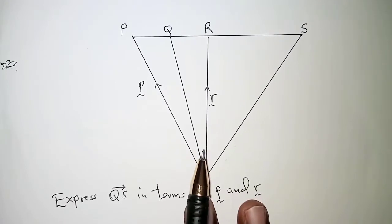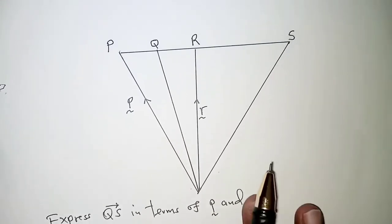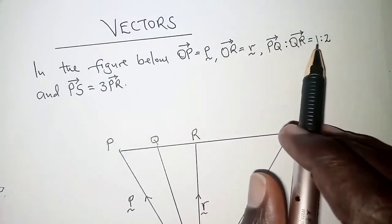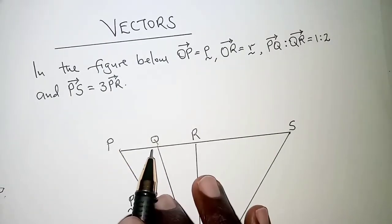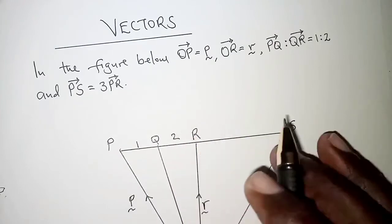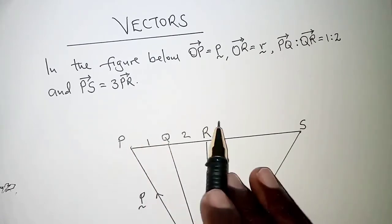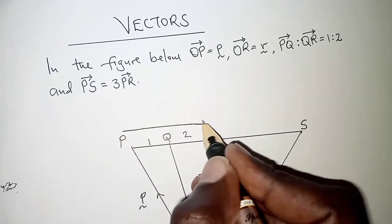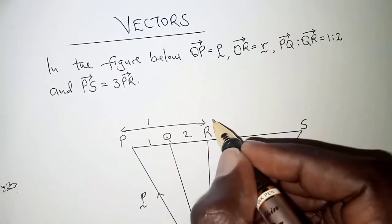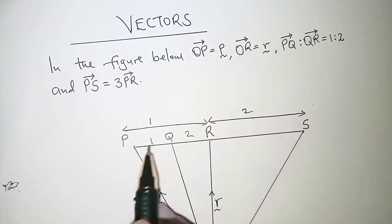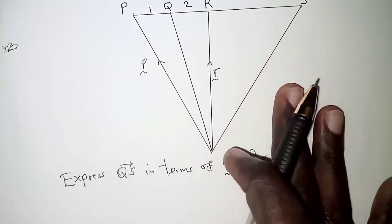We have the diagram as shown, and we need to express QS in terms of p and r. First we interpret the ratios: PQ to QR is 1 to 2, meaning from P to Q and then Q to R the ratio is 1 to 2. We are also told PS is 3 times PR, so if PR is 1, then the whole of PS is 3, meaning RS is 2, so PS equals 1 plus 2 equals 3.